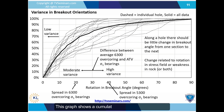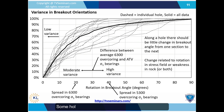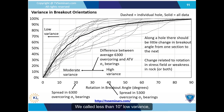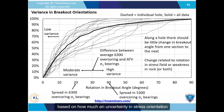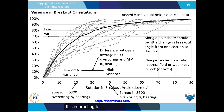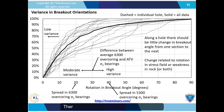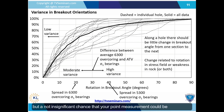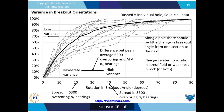This graph shows a cumulative distribution of the change in breakout angle from one section to the next. Some holes had distinctly greater variance than others. We called less than 10 degrees low variance, less than 30 degrees moderate variance, and greater than 30 degrees high variance, based on how much uncertainty in stress orientation might affect a numerical model's results. It is interesting to think about whether these variations represent the uncertainty you might get from a point measurement — there is a decent chance of getting good results, but a not insignificant chance that your point measurement could be very wrong, like over 45 degrees off.